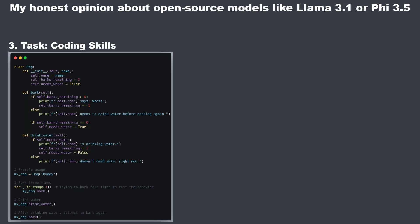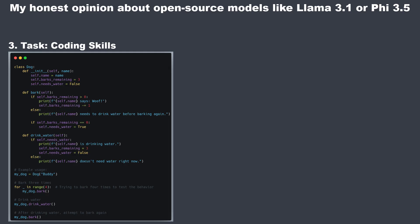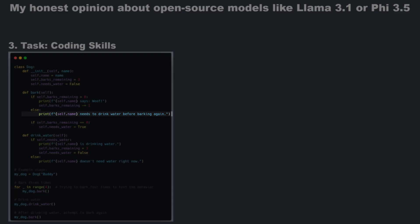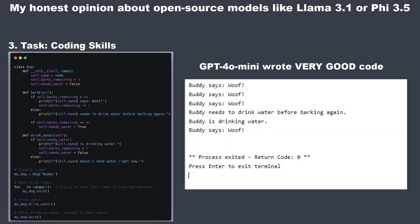GPT-4O mini's dog class includes a 'barks_remaining' attribute initialized to 3 — the only model to take this into consideration. The bark method checks if 'barks_remaining' is greater than 0, prints 'woof' using an f-string with the dog's name, and decrements the counter. The result shows Buddy barking three times, then receiving a message that he needs to drink water before barking again. After drinking, he can bark again. GPT-4O mini produced what I would call perfect code, and I'm very satisfied with that result.